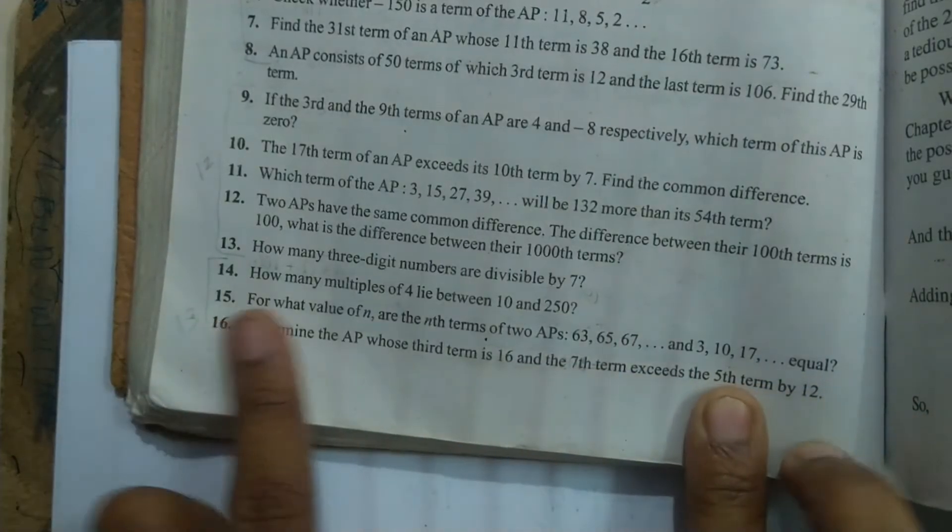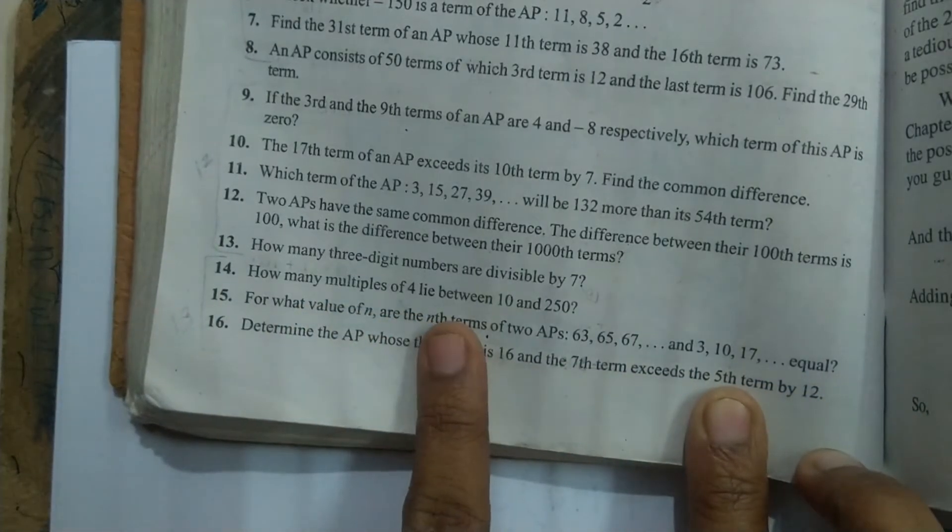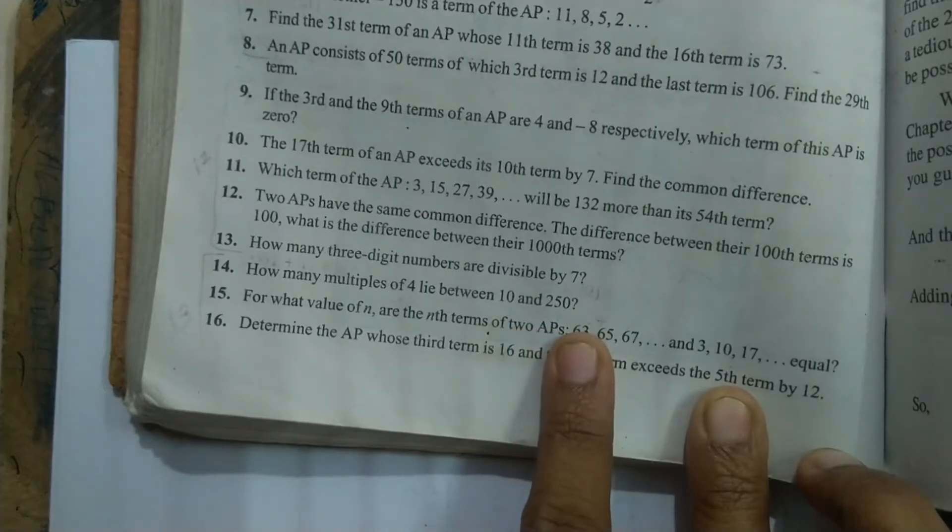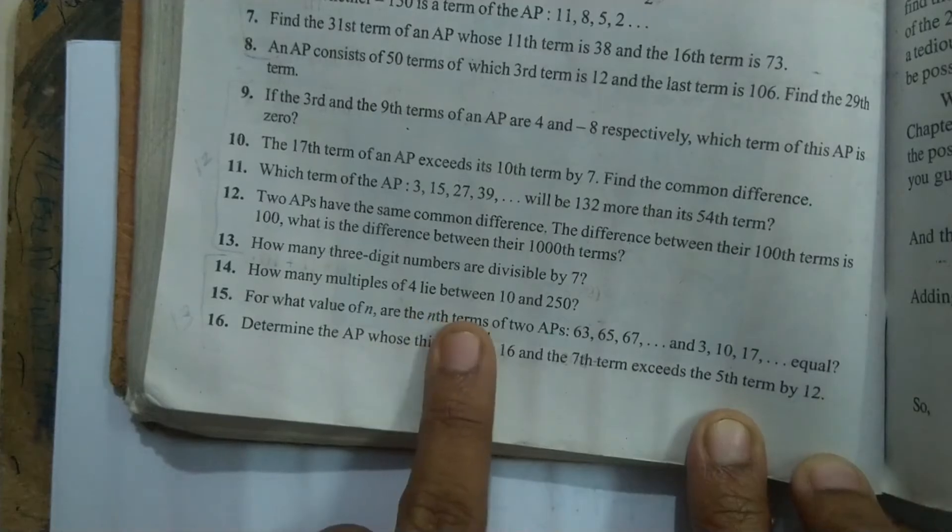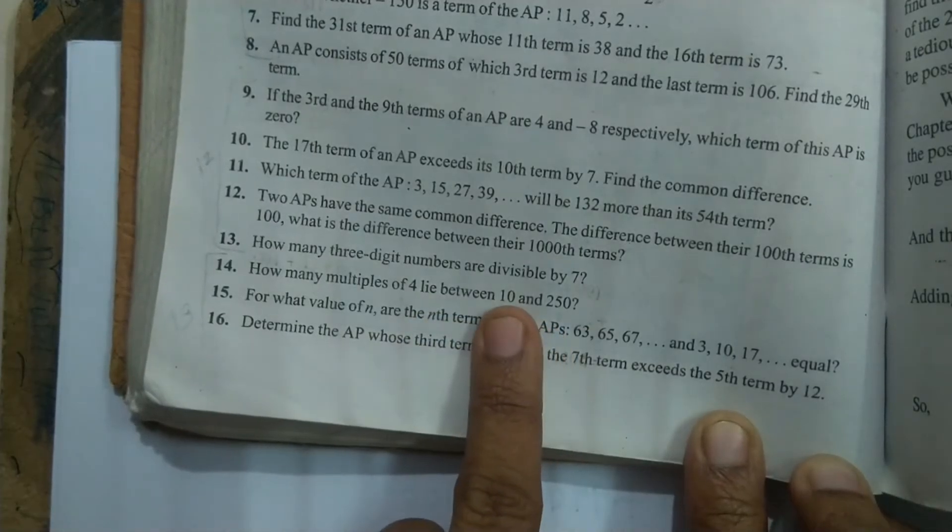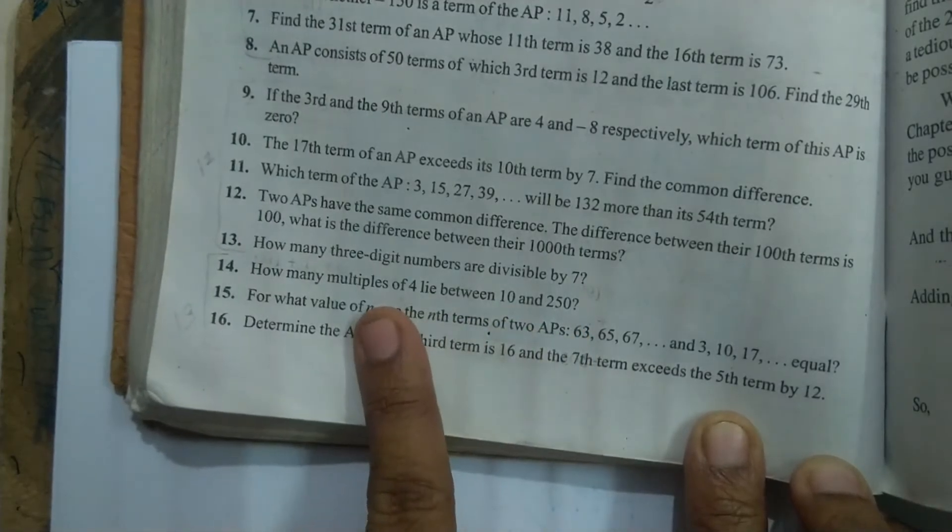This is 5.2, Question No. 14. How many multiples of 4 lie between 10 and 250? How many multiples of 4? 4 tables lie between 10 and 250.